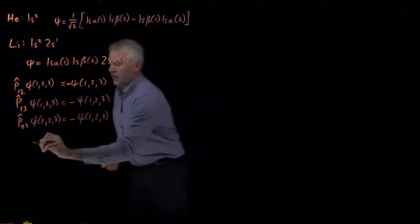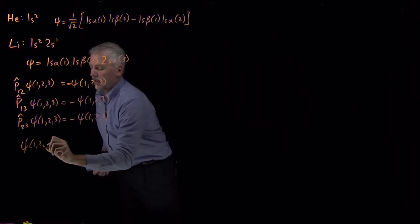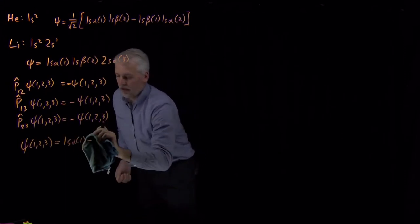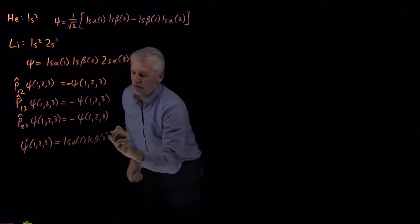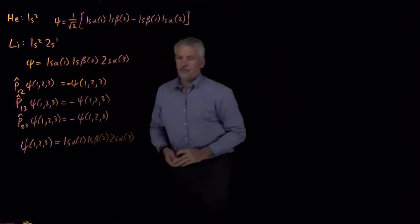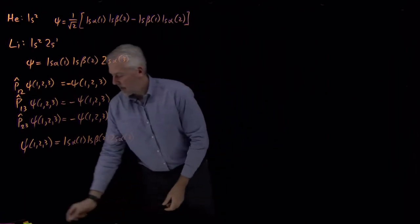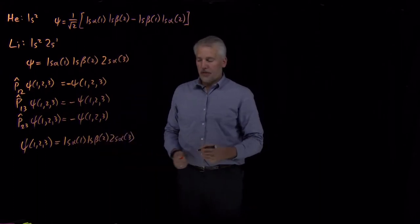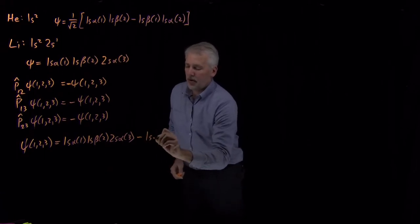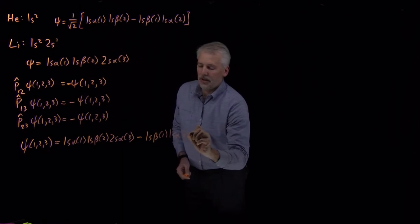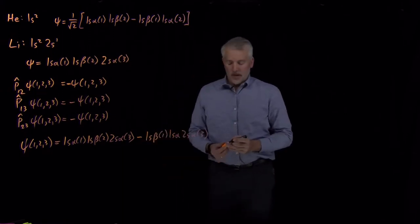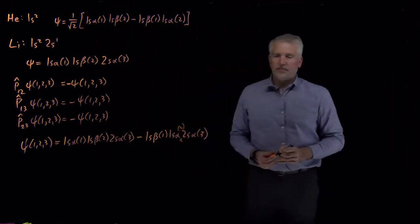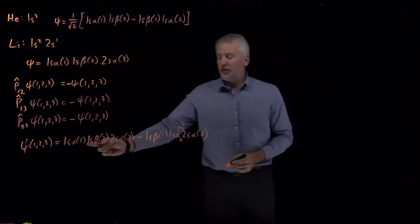A somewhat better version of this wave function starts with what I wrote down originally: 1s alpha(1) times 1s beta(2) times 2s alpha(3). My procedure for anti-symmetrizing says to take any one of these exchanges. If I exchange electrons 1 and 2, I should get a term in the wave function that looks like the opposite of what I started with. I can build that in by hand by including a term 1s beta(1), 1s alpha(2), 2s alpha(3) with a negative sign.